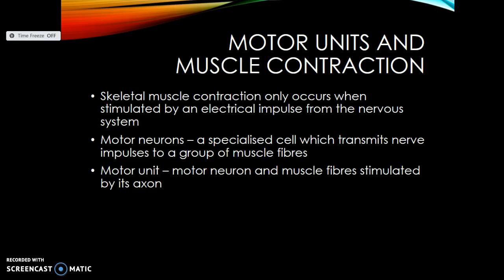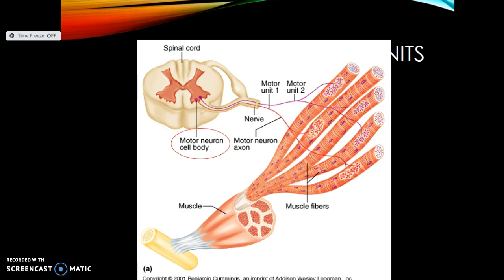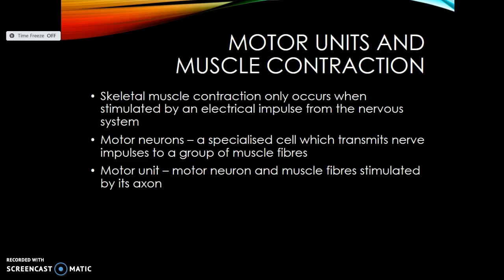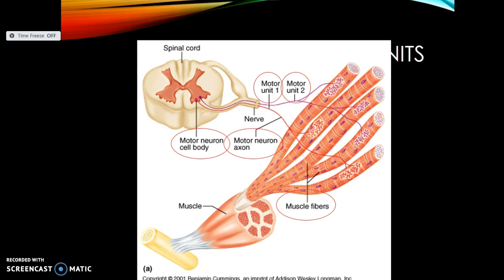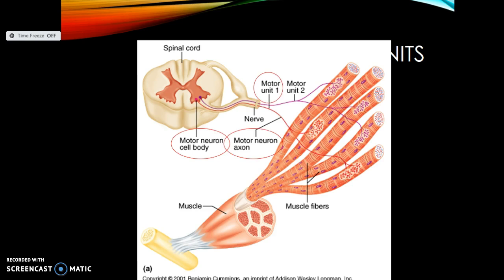A motor unit is the overall term to describe muscular contraction. Looking at the diagram, you've got the spinal cord here, which is where the central nervous system sends information. The motor neuron sends the information down the motor neuron axon to the muscle fibers. The motor unit is the overall concept we're looking at, and it goes to the muscle fibers.